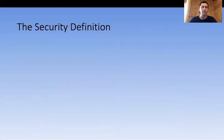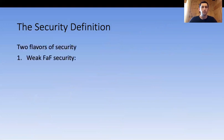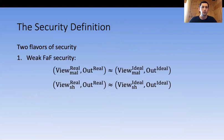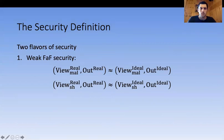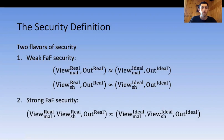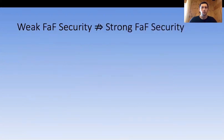Given this ideal world, we define two flavors of FaF security. The weaker one requires that the view of the malicious party and the outputs of both the honest and semi-honest parties are roughly the same in the real and ideal worlds, and separately that the view of the semi-honest party and the output of the honest party match. The stronger notion requires the joint distribution of all three random variables to look roughly the same in both worlds.